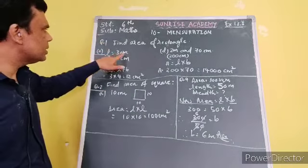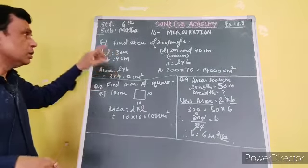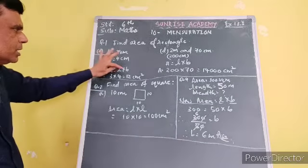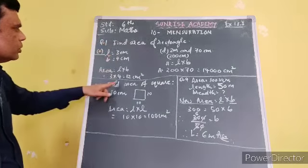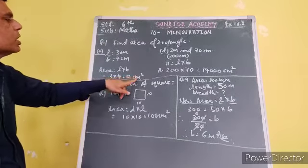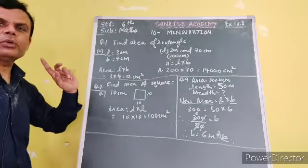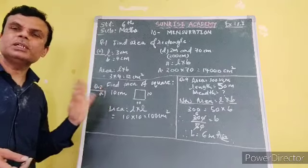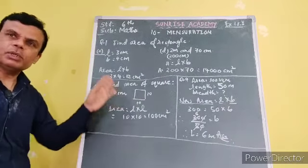In the first sum, length is 3 cm and breadth is 4 cm. So, the area is length multiplied by breadth. Here length is 3, breadth is 4. So, 3 multiplied by 4 means 12 square centimeters. Its unit is centimeter square. You can write cm² or square cm.